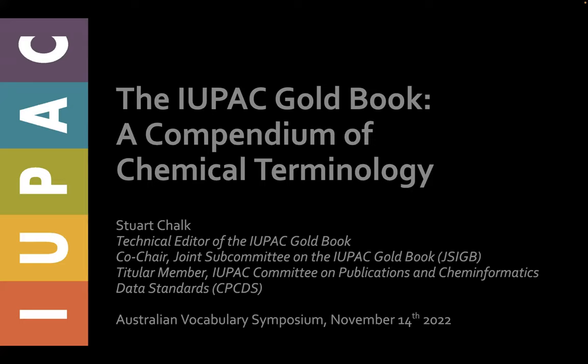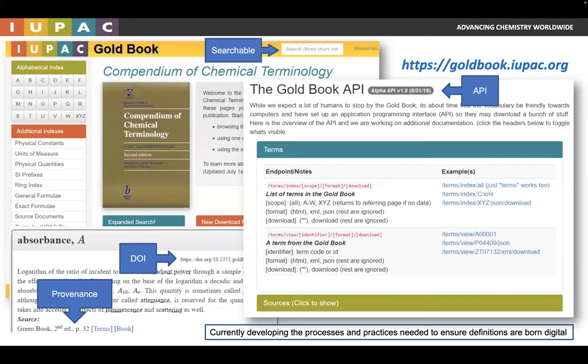I'm going to give you a quick overview of what is called the Compendium of Chemical Terminology — that's the formal title. However, it's colloquially known as the IUPAC Gold Book because of Dr. Victor Gold, who was the initial editor. The online site has approximately 7,000 chemical concepts defined, linked back to the original source documents, which are published in IUPAC's journal, Pure and Applied Chemistry.